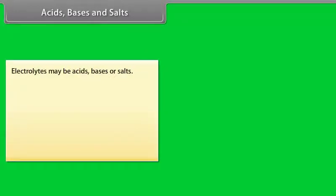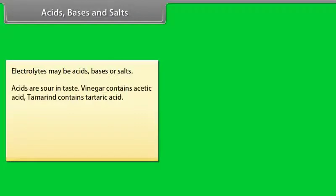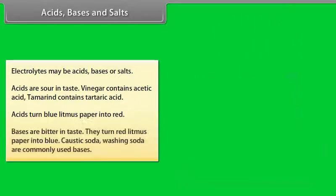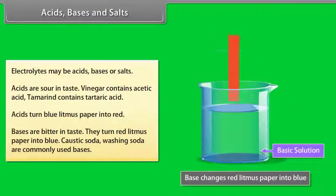Electrolytes may be acids, bases, or salts. Acids are sour in taste — vinegar contains acetic acid and tamarind contains tartaric acid. Acids turn blue litmus paper into red. Bases are bitter in taste and turn red litmus paper into blue. Caustic soda and washing soda are commonly used bases.